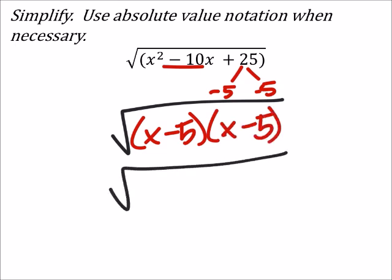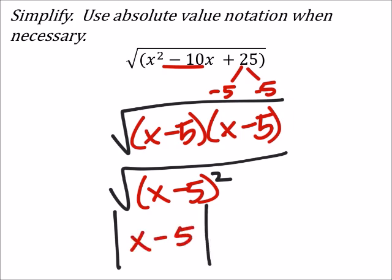Which really is the square root of x minus five squared. Now if we take the square of something and then square root it, it's really like taking the absolute value. There's our answer.